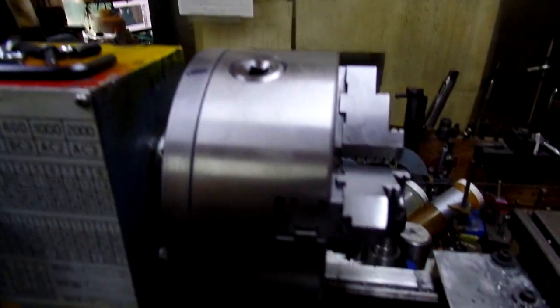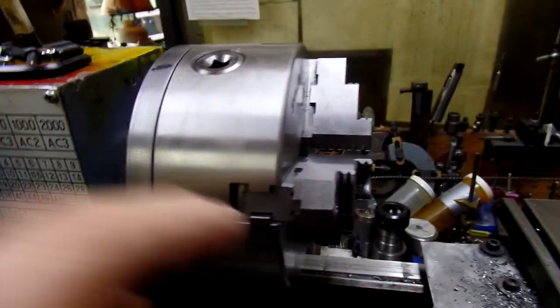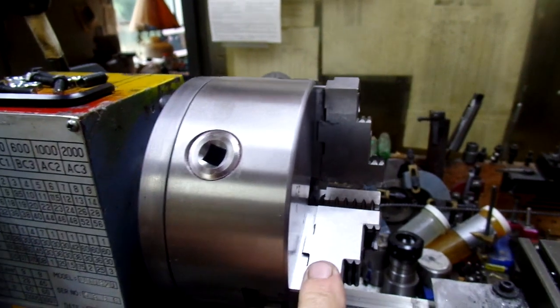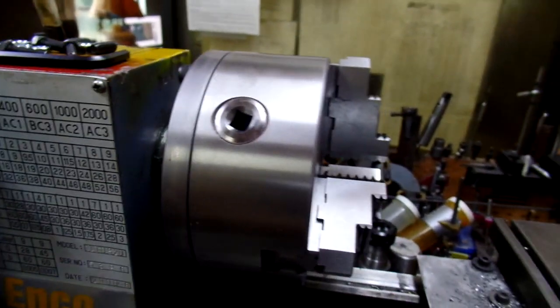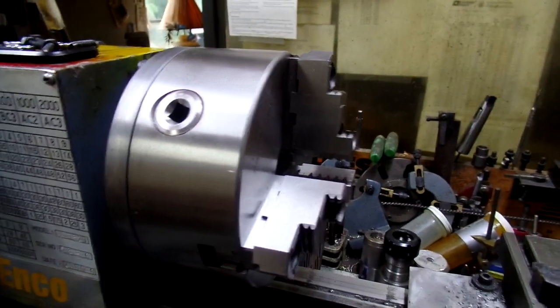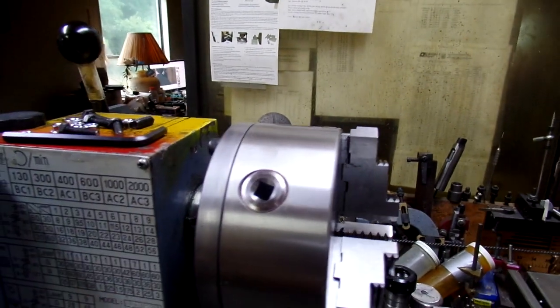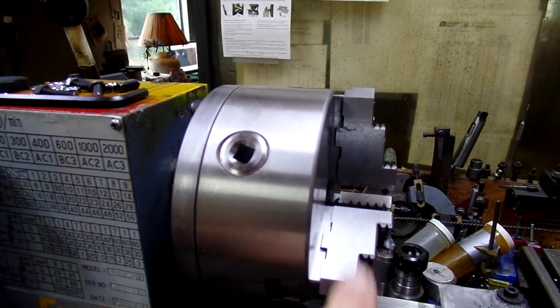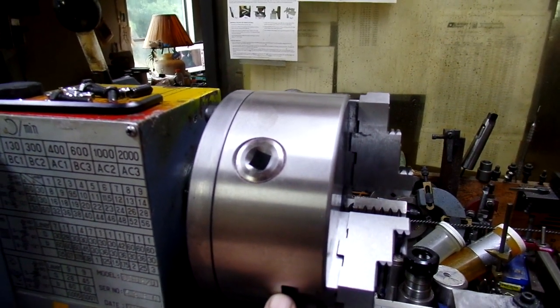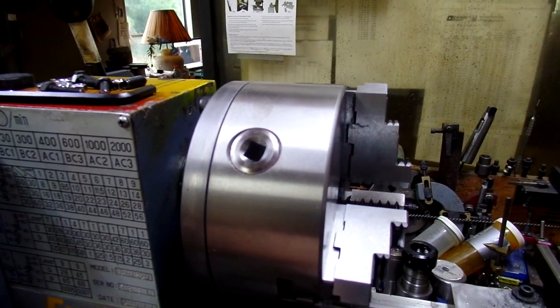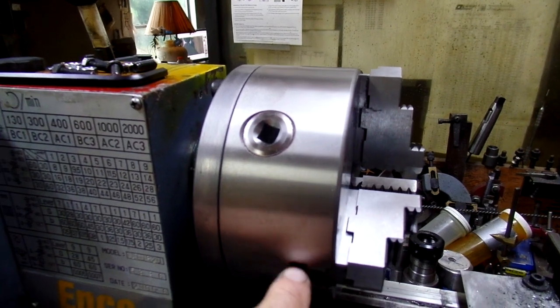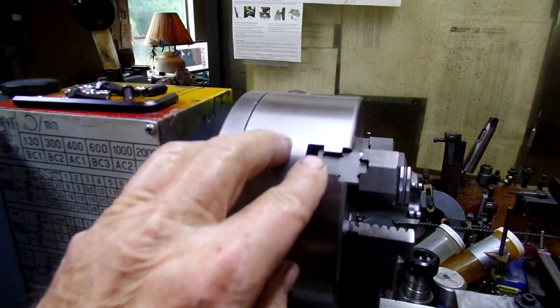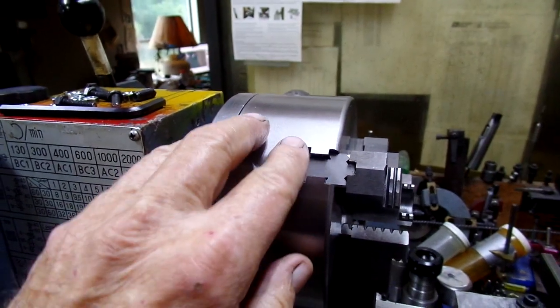As you can see, it's got reversible jaws, which is a feature I've been looking for. Overall, the chuck looks to be very well made. The jaws are numbered, the slots are numbered, so if you take it apart, everything goes back in the same slot. It could have stood a little more deburring; some of the edges are a little bit sharp.